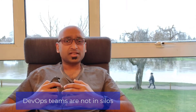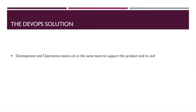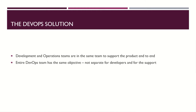Now let's see how DevOps provides a solution to this quagmire. In DevOps, teams are not situated in silos — specifically the development and operation teams that support a product. Both the development and operation teams are part of the same team and do not have different objectives. The entire team has a single set of objectives, in stark contrast to non-DevOps teams where development teams aim to introduce new features and operation teams aim to maintain stability.